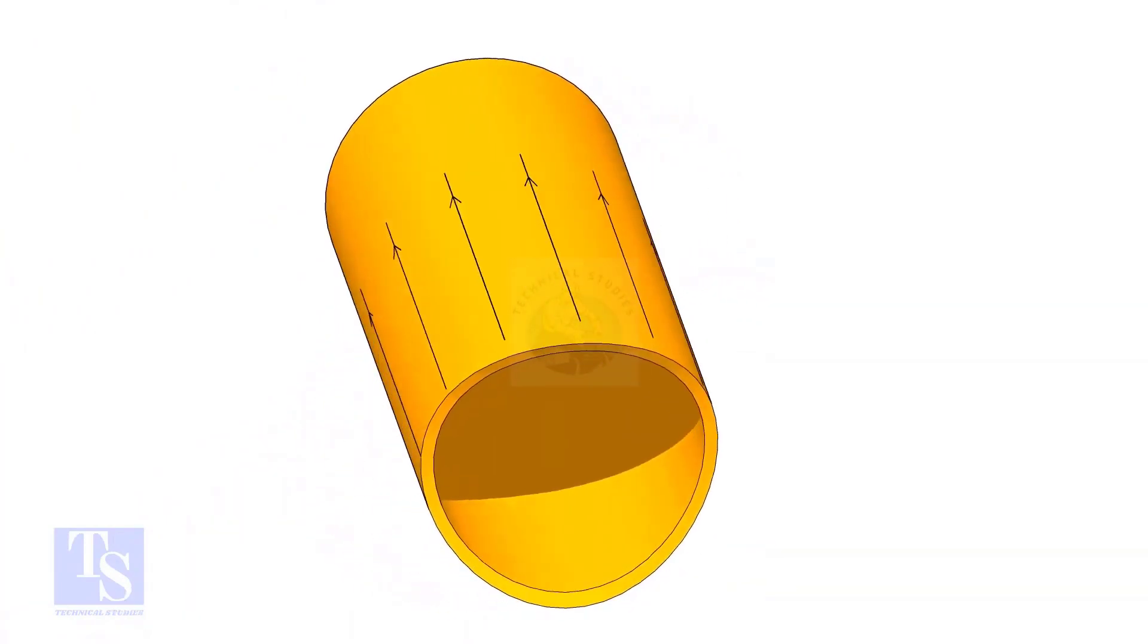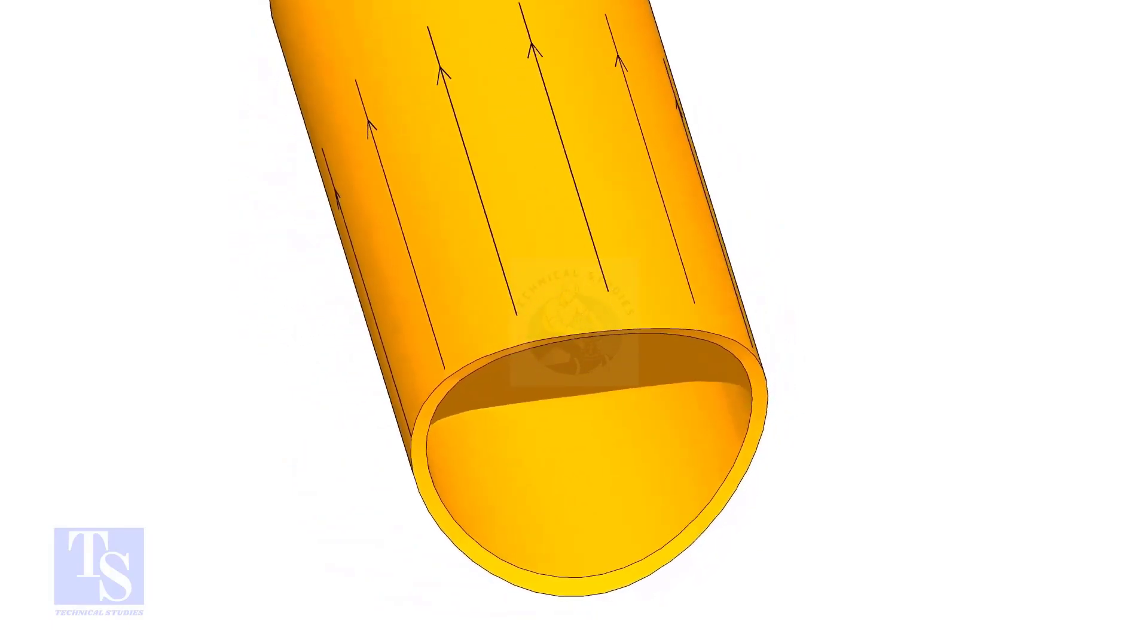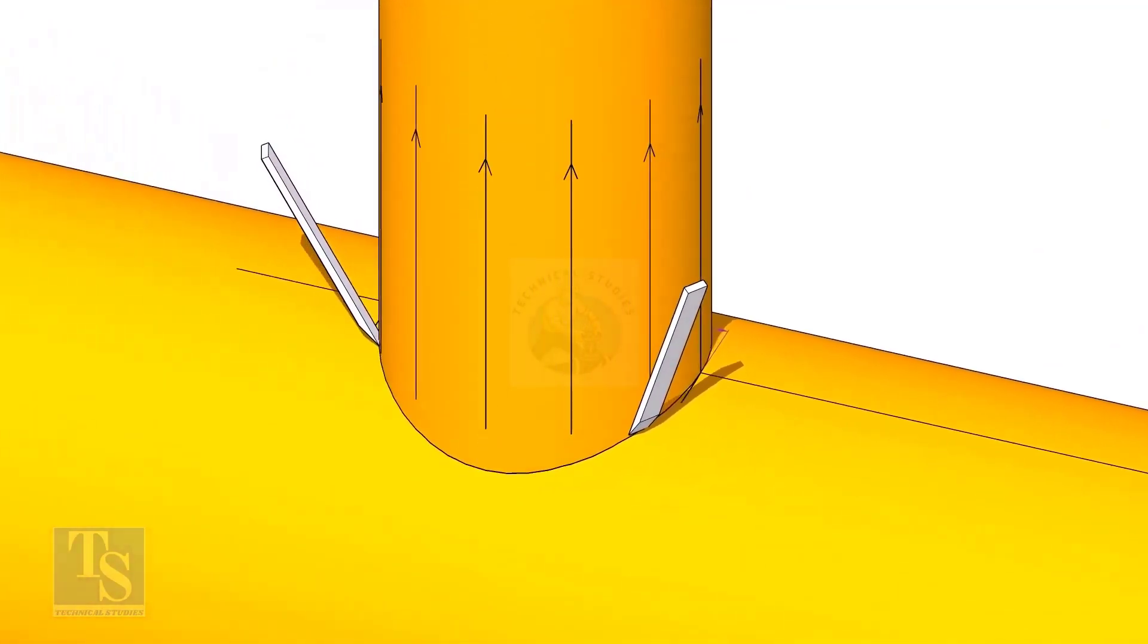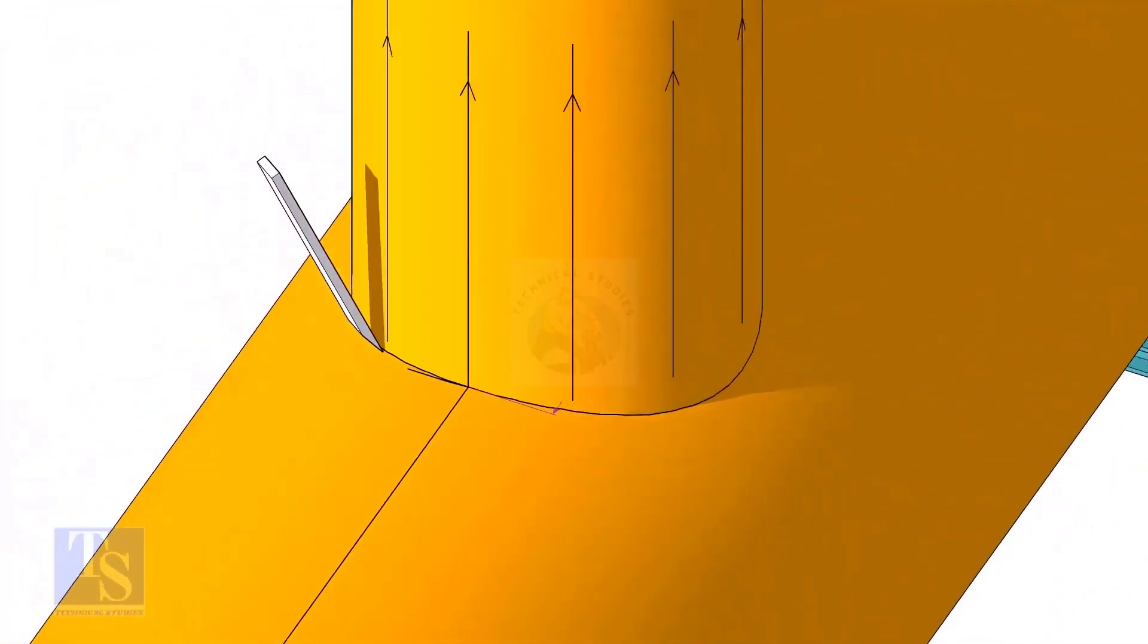After cutting and grinding the notch on the branch pipe, put it on the header. Make sure it is exactly in its position and mark the opening on the header as shown.